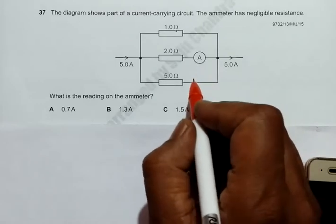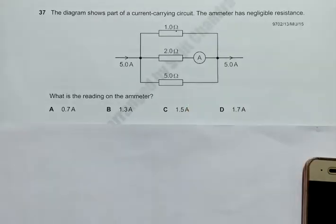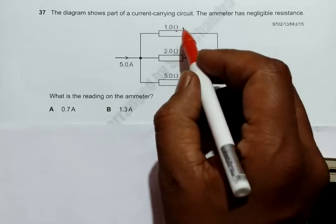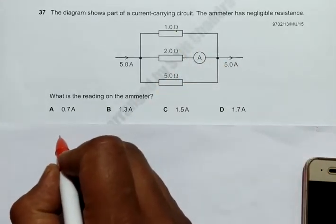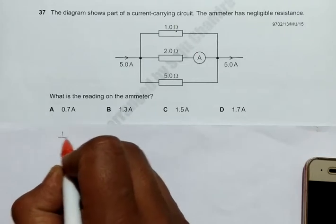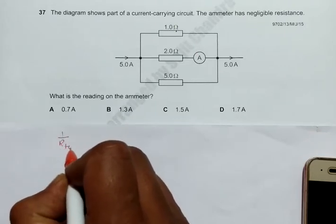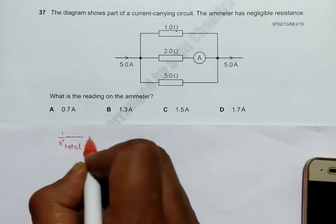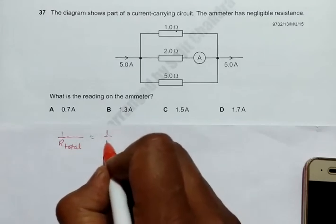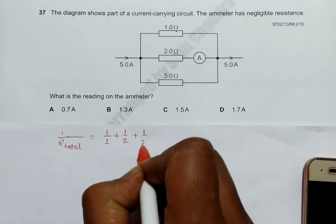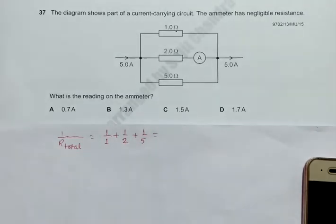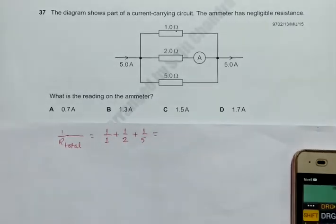As we go through the circuit, since the resistors are in parallel, the total resistance will be: 1/Rtotal = 1/1 + 1/2 + 1/5, which will be equal to, as I go through this calculator, it will be 1